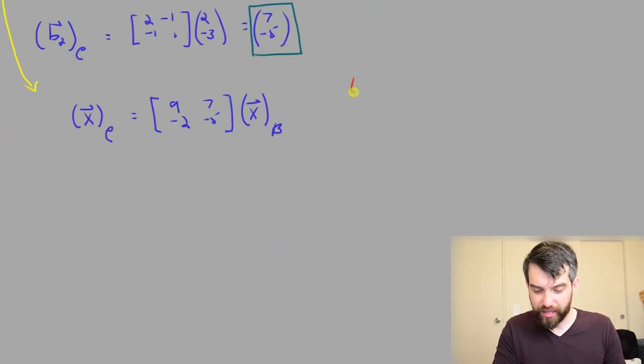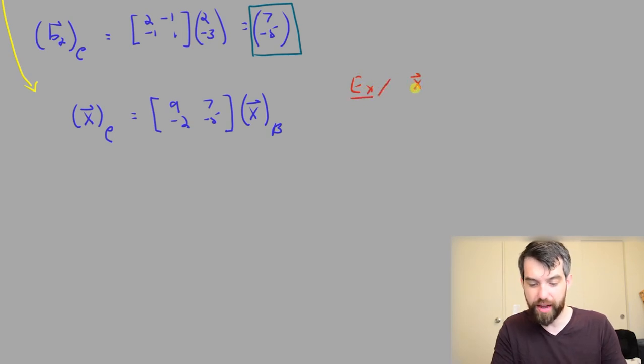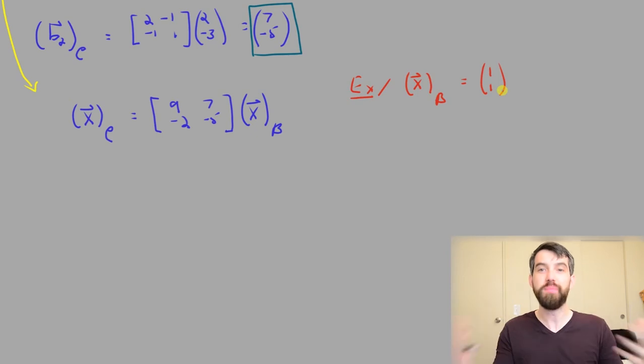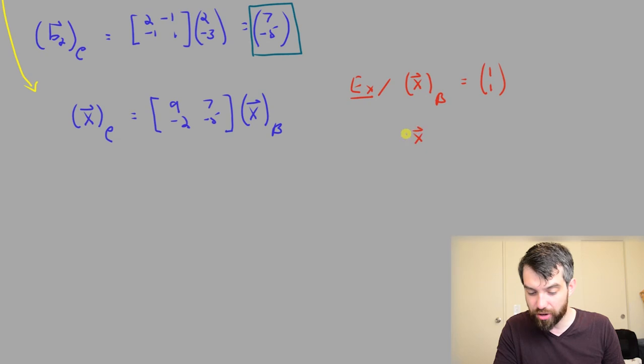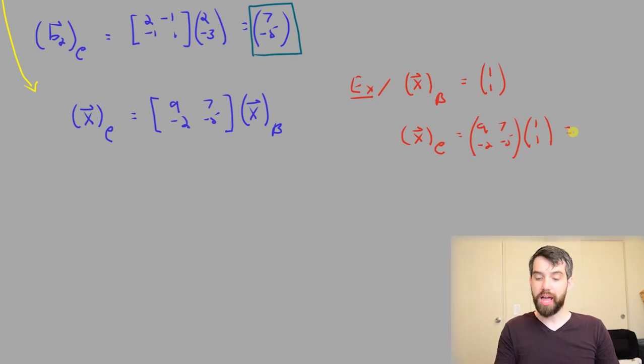If I want to take a specific example of this, I could say, suppose I have a specific vector x and it's going to be the vector, how about 1, 1. So I'm saying that this vector in the B basis is going to be 1, 1. Then if I want to know what that same vector is in the C basis, it's going to be the 9, 7, minus 2, minus 5. That matrix all multiplied by 1, 1. And what do we get? 9 plus 7 is 16, minus 2 minus 5 is minus 7. And I get this vector here.